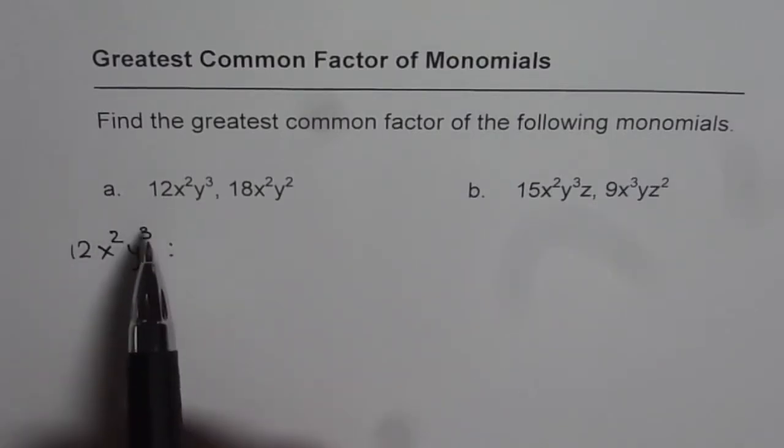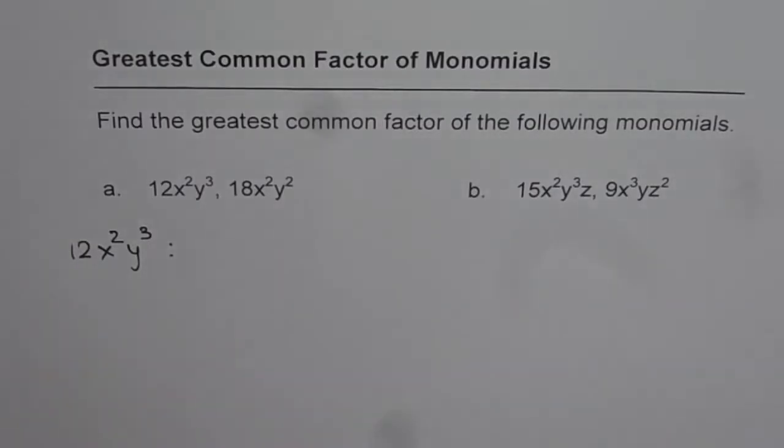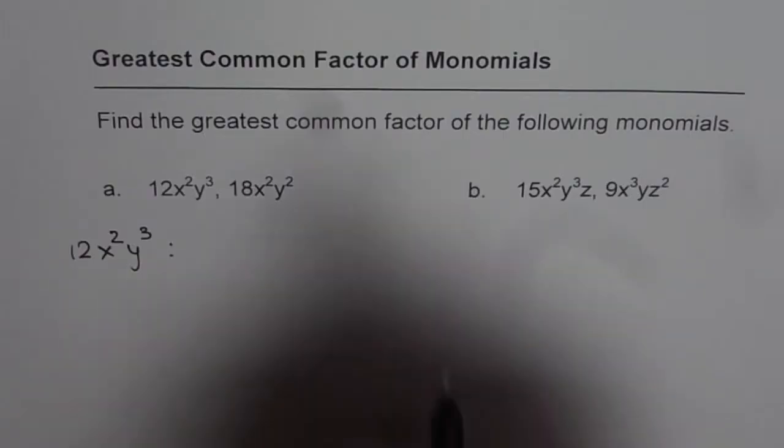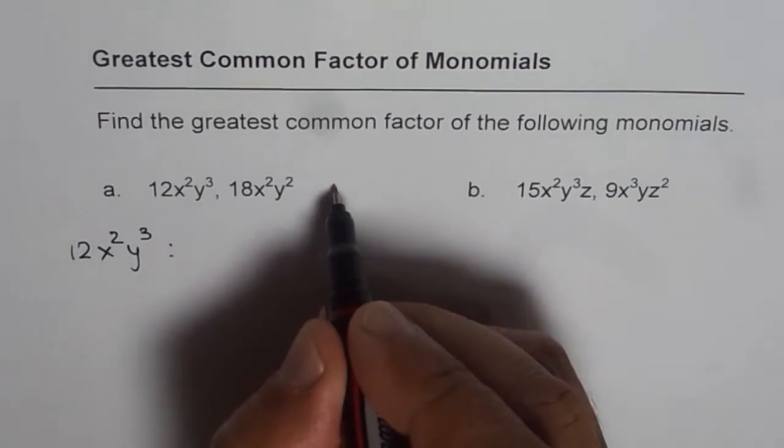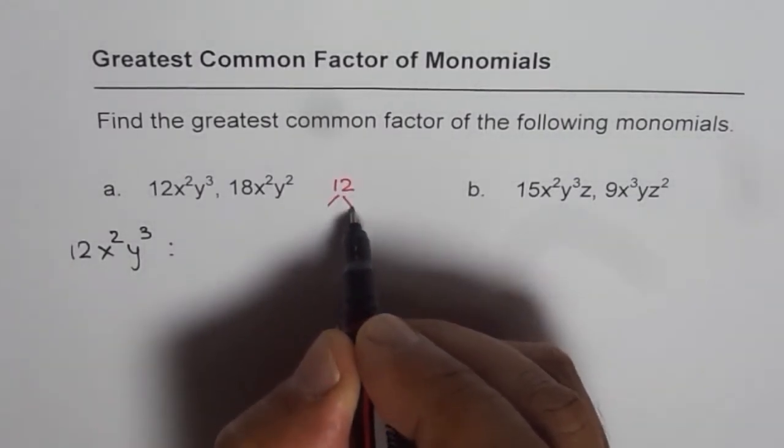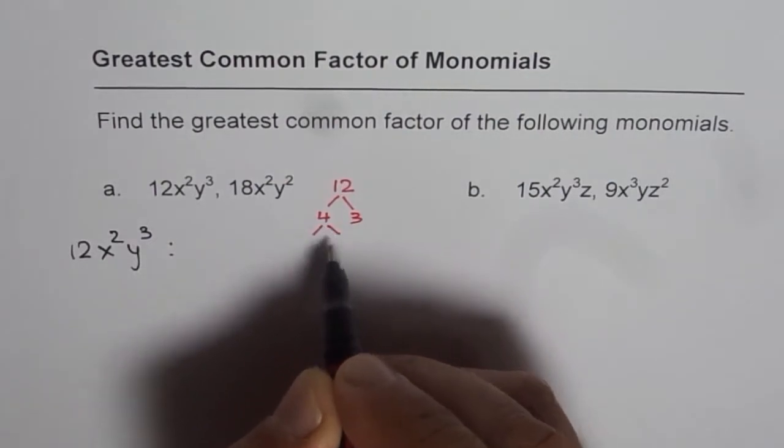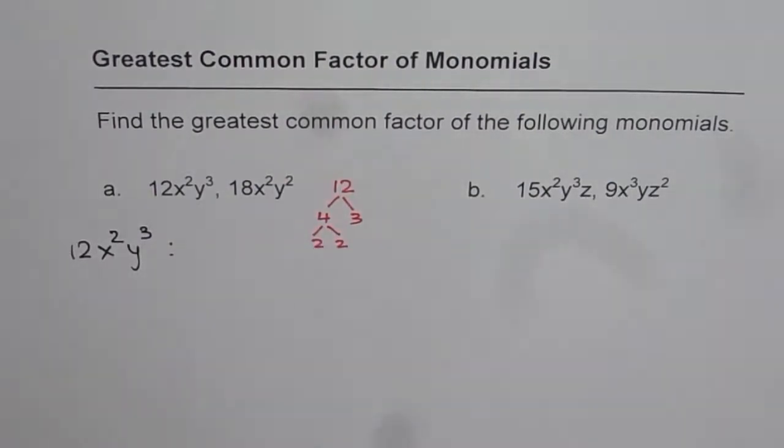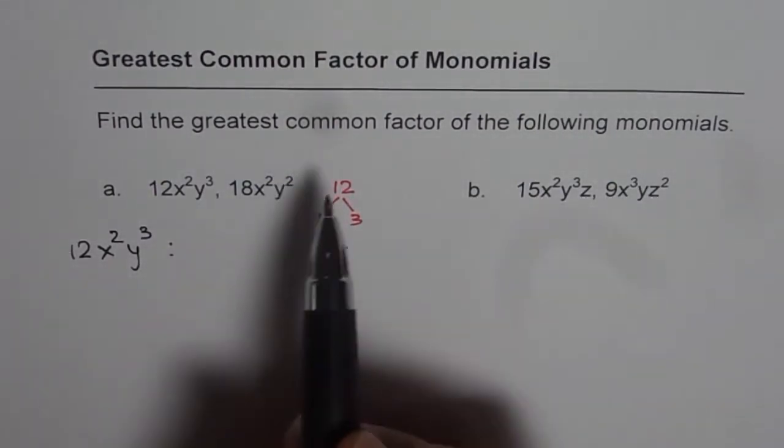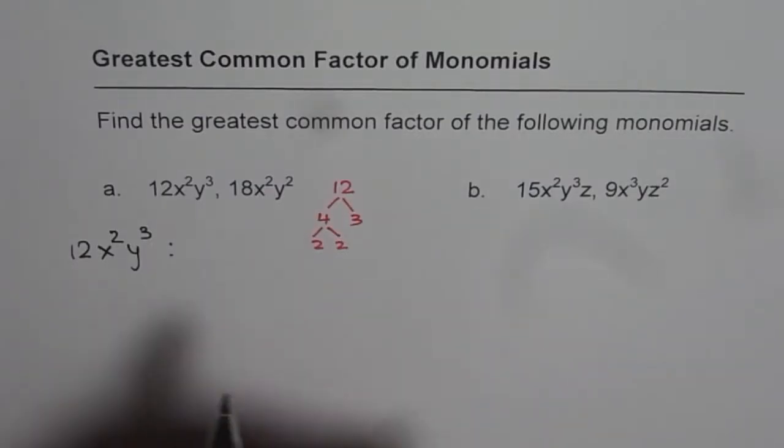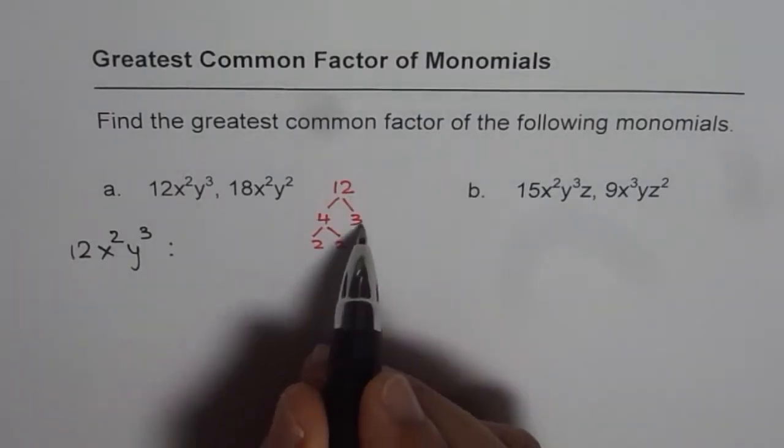We can write 12 with prime factorization. Let's find prime factors of 12. 12 could be written as 4 times 3 and 4 could be written as 2 times 2. So we get prime factors of 12 as 2 times 2 times 3.